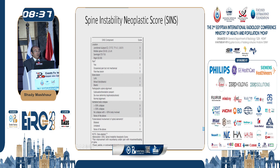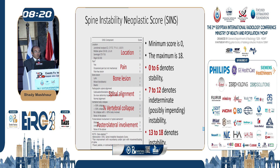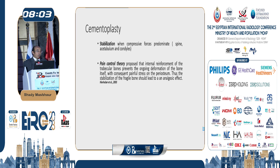How do we score instability? The most common score for the spine is the Spinal Instability Neoplastic Score, or SINS. We assess location, presence and type of pain, bone lesion type — lytic, blastic, or mixed — spinal alignment, vertebral body collapse, and posterior element involvement. A score of 0 to 6 is stable; 7 to 12 is indeterminate or possible instability; 13 to 18 indicates instability. There are other scores for the acetabulum or pelvis, and for long bones — a Mirels score above eight indicates intervention.